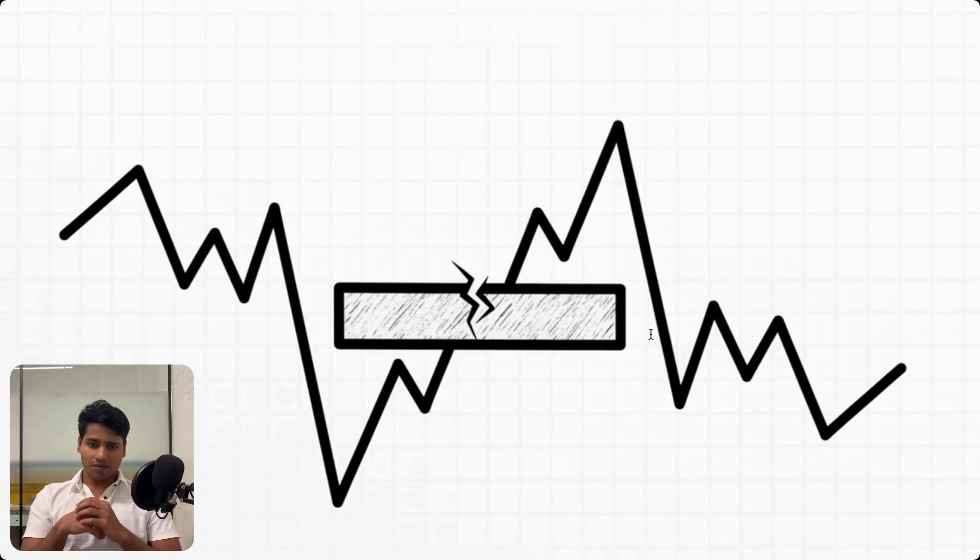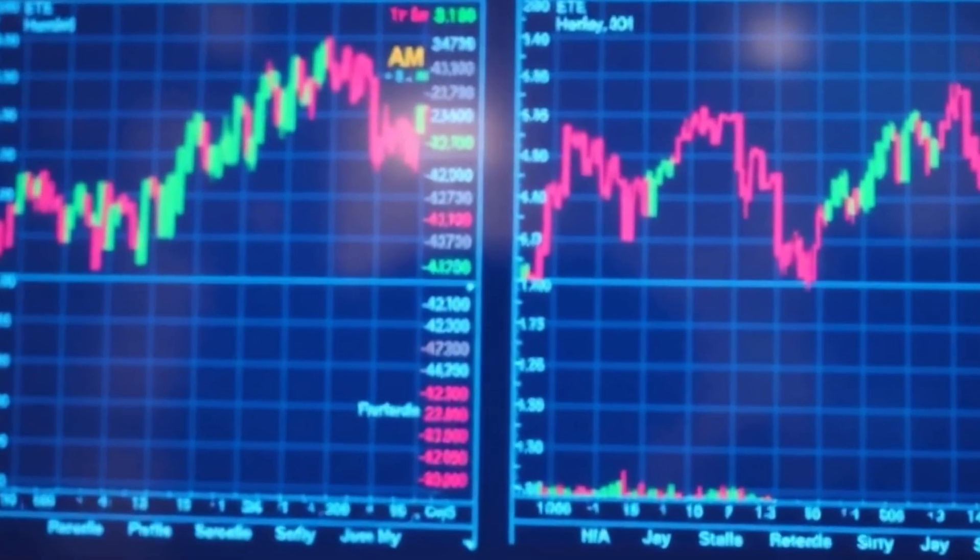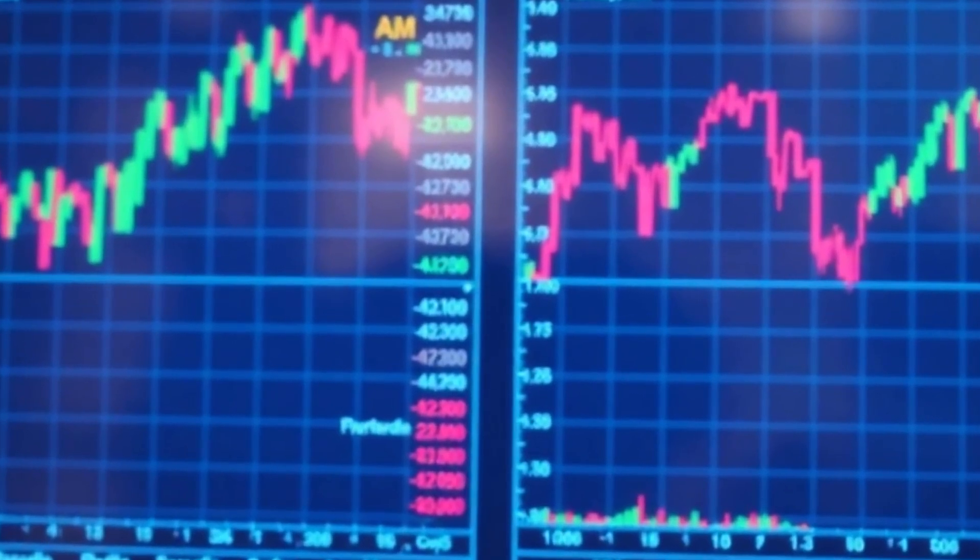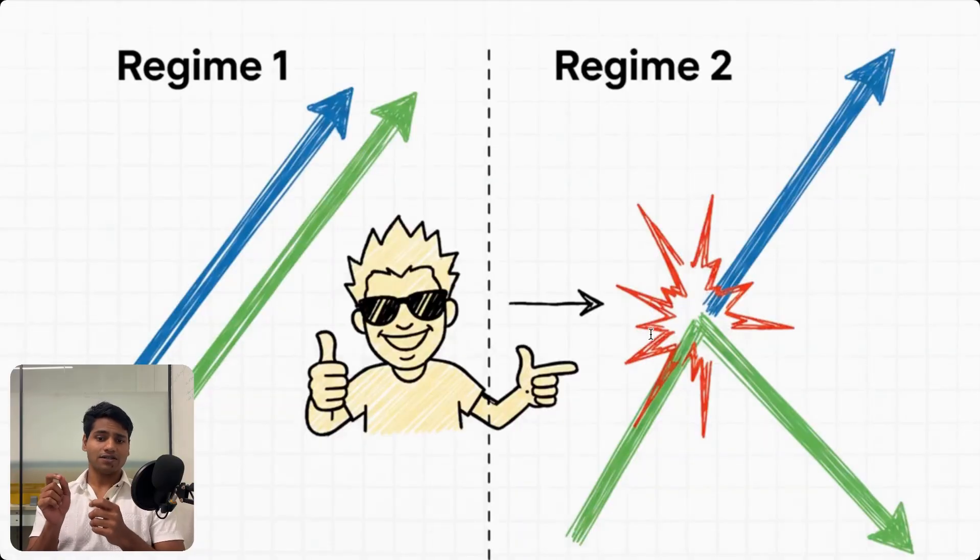Okay, so that's one major crack in the system. But here's another one: the idea of correlation. Quants build these beautiful models based on how different assets are supposed to move together, like maybe these two tech stocks usually rise and fall in tandem. The model treats that relationship as a stable, predictable fact. But is it?